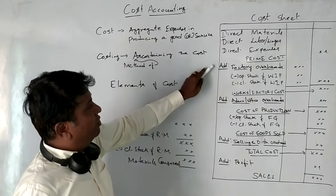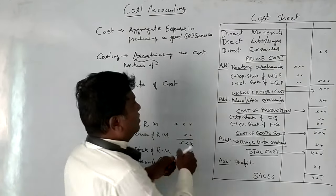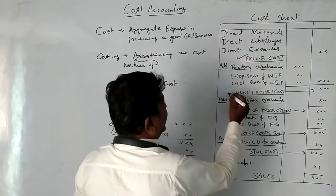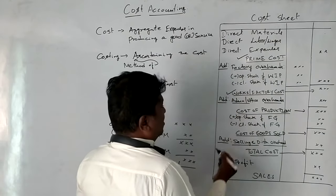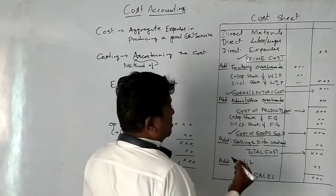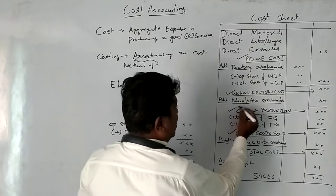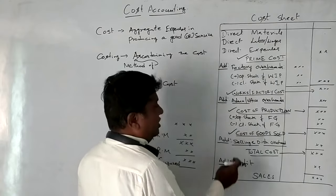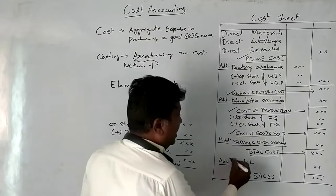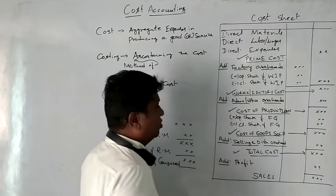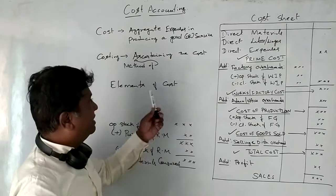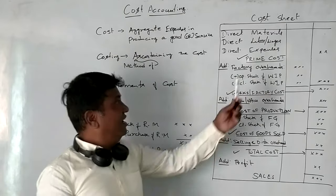There are five elements of cost. First is Prime Cost. Second is Works Cost. Third is Cost of Production. Fourth is Cost of Goods Sold. Fifth is Total Cost. These are the five elements of cost.